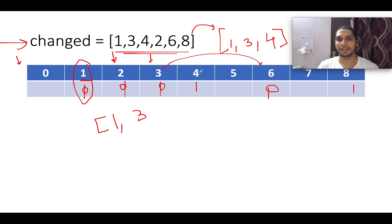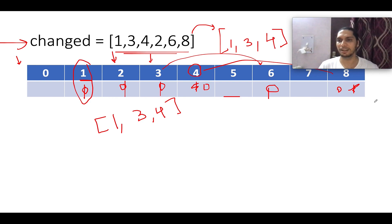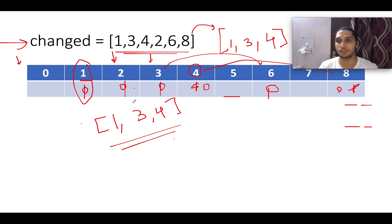Next, element 4 has a non-zero frequency. We double it to get 8. The frequency of 8 is 1 — since both are greater than zero, we reduce both frequencies to zero, and 4 gets added to the original array. Continuing, elements 5, 6, 7, and 8 all have zero frequency. The loop runs up to the maximum limit of 10^5. The original array we've identified is 1, 3, and 4.